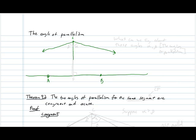One very important question is: if we drop a perpendicular from point C to line AB and consider this angle alpha, and maybe there's a different angle on the other side, angle beta — what can we say about these angles alpha and beta? These angles are called the angles of parallelism.